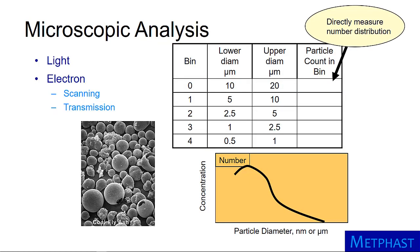After collection, particles can be analyzed by microscopy. Light microscopy is limited to particles roughly larger than the wavelength of light, or about 500 nanometers. Scanning electron and transmission electron microscopy allow detection to much smaller particles — around 50 nanometers for scanning and 10 nanometers for transmission electron microscopy.